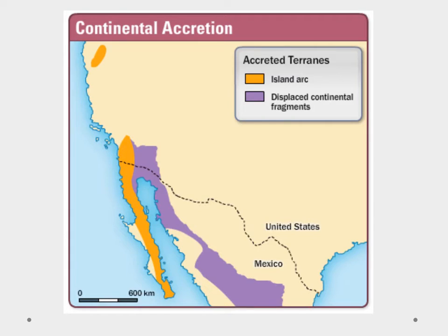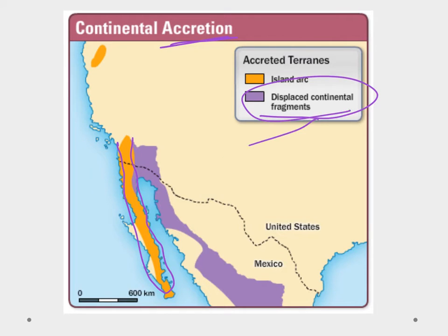One important term is accretion. Accretion is where we're adding bits and pieces from one plate to a different plate to build it up. We can see island arcs and displaced continental fragments that are examples of this — they're just kind of adding up, accreting onto that plate.